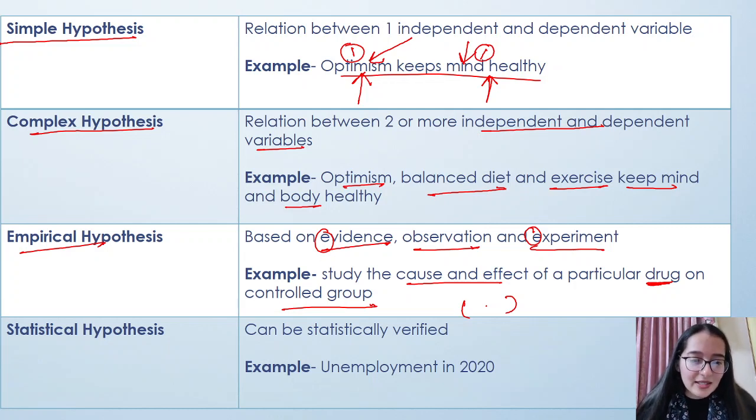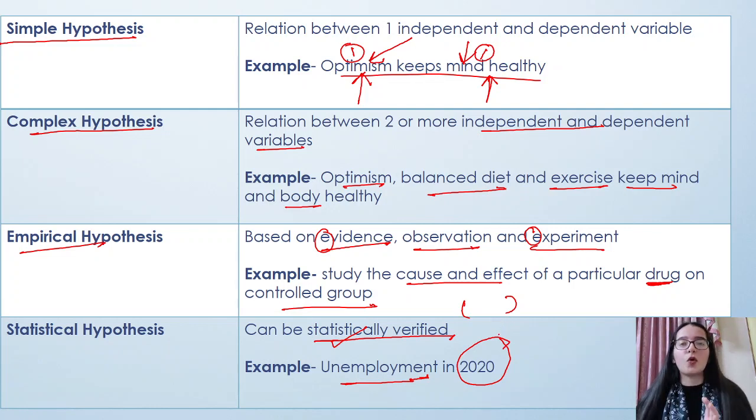Next one is statistical hypothesis. It is the one that can be statistically verified. How? For example, we have to know about what was the unemployment in India in the year 2020. Statistics involves figures. You'll find out that 2 lakh people or 3 lakh people or whatever number. You'll have a number, you'll have statistics - how many people were unemployed, in which year, in 2020. That is talked about in statistical hypothesis.